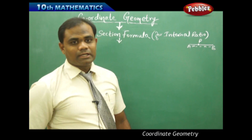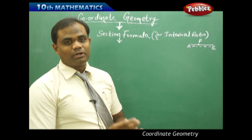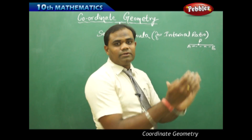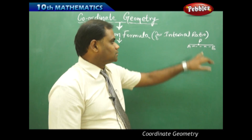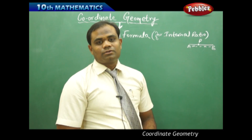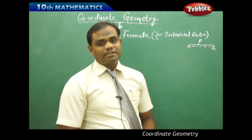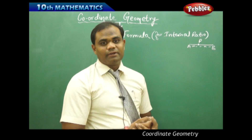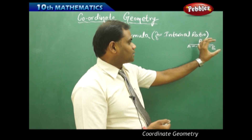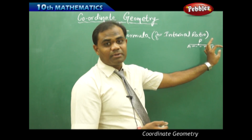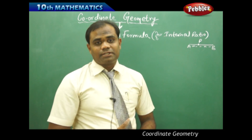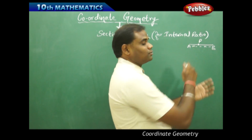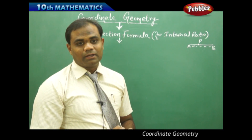This is called the section formula because we have the section of the line divided by point P. When P divides AB internally in the ratio M to N, we get section AP and section PB, which are independently calculated using the section formula.